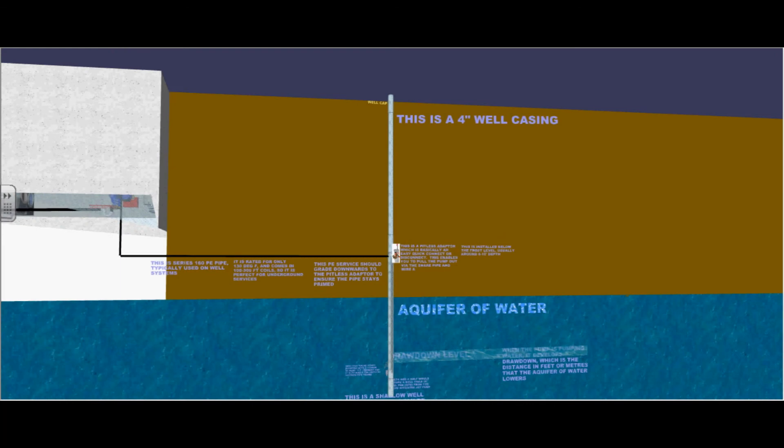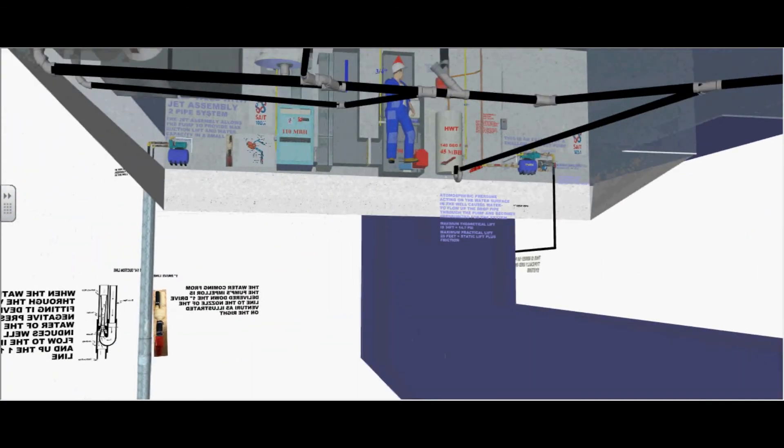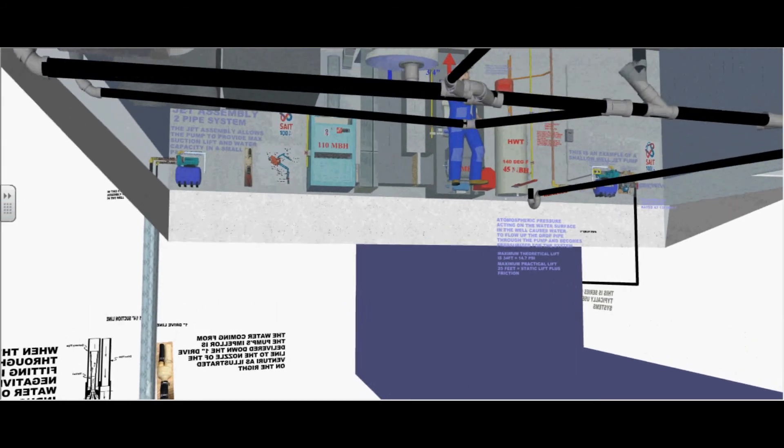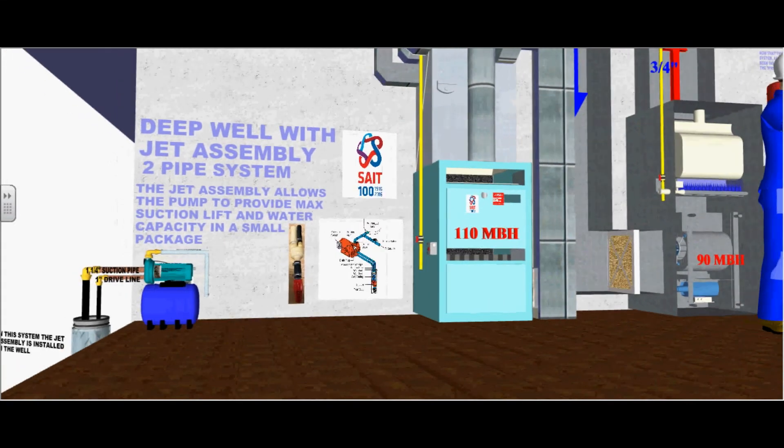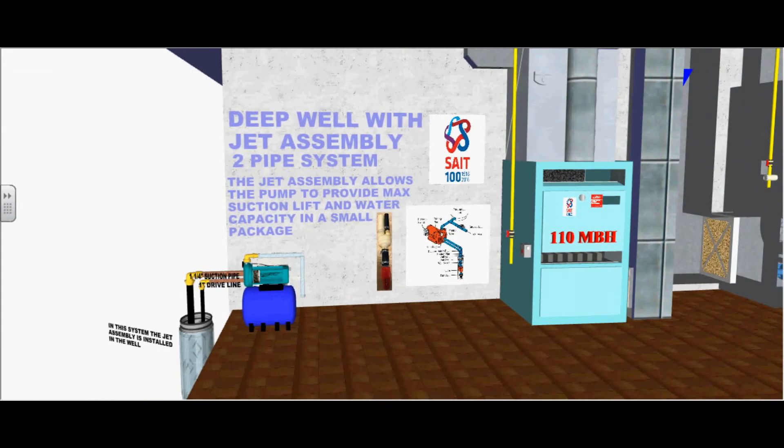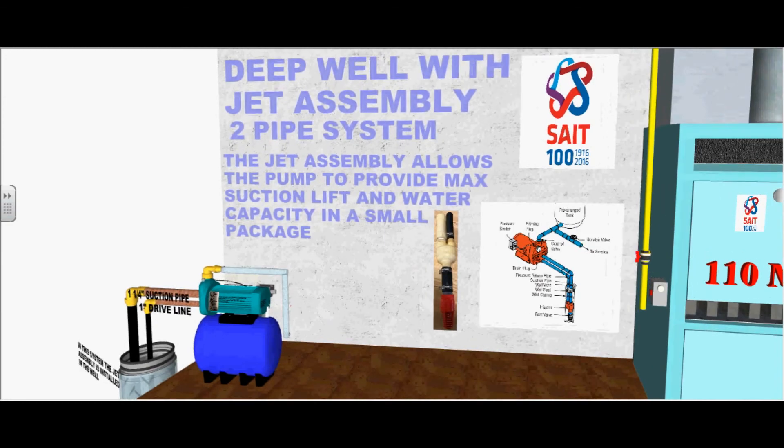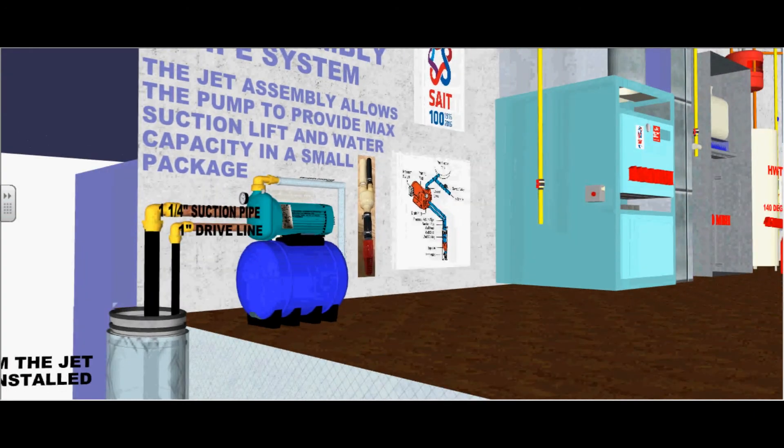This finishes part 1 for shallow well jet pumps. Let's take a look at an example of a deep well jet pump by attaching a jet assembly to a regular pump. The jet assembly allows the pump to provide maximum suction lift and water capacity in a small package. Here you can see the jet assembly on the vertical location. It can be attached to the pump or below the pump.